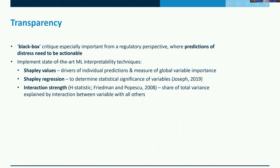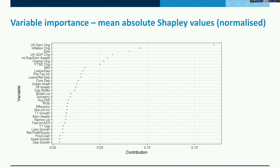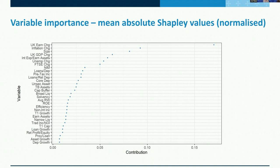Taking the mean absolute Shapley value per observation, normalized to sum to one, gives us relative variable importance. The top results show that three of the top five variables are macro variables: UK earnings change is the most important by a long way, followed by inflation, and then size as number three. This makes sense for the 2006–2012 period — bigger, more interconnected firms ran into problems, and this was a very macroeconomic shock that reverberated through the financial system.